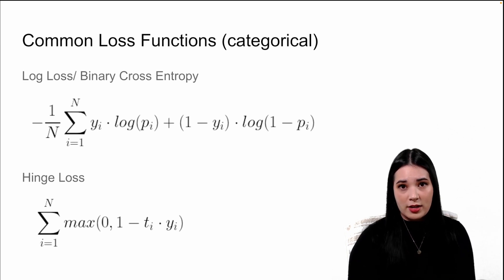You may also see a hinge loss function. Hinge loss functions basically ignore or bring to zero very small errors. So if you're very close, you get zero error.